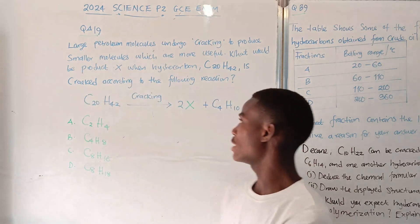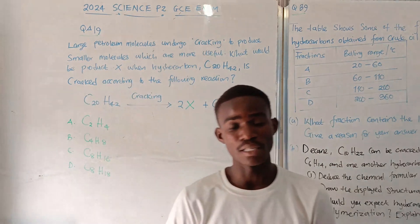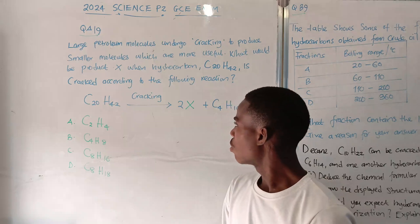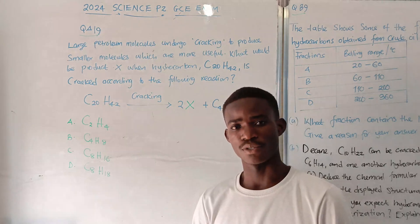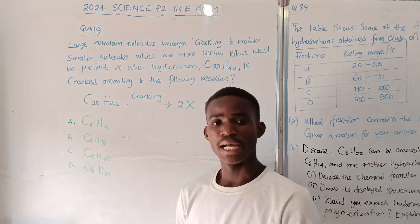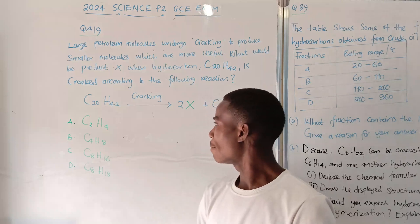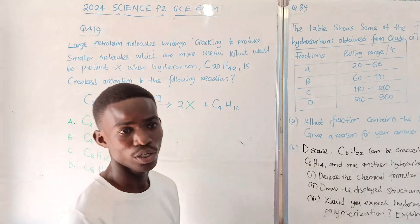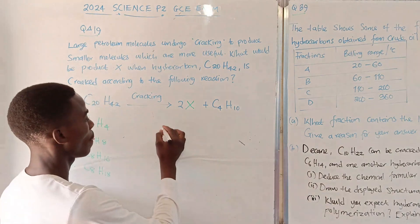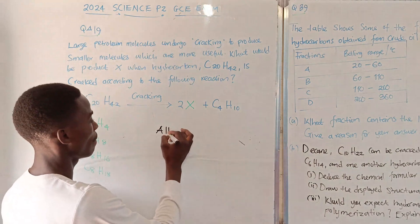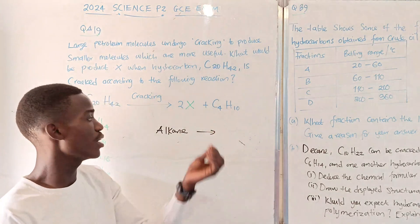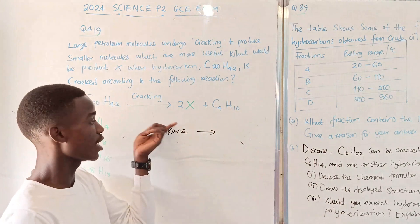First of all, we need to understand what the term cracking is. Well, cracking is one of the chemical properties of alkanes. Cracking is just a process whereby large hydrocarbons are split or broken down into smaller hydrocarbons.